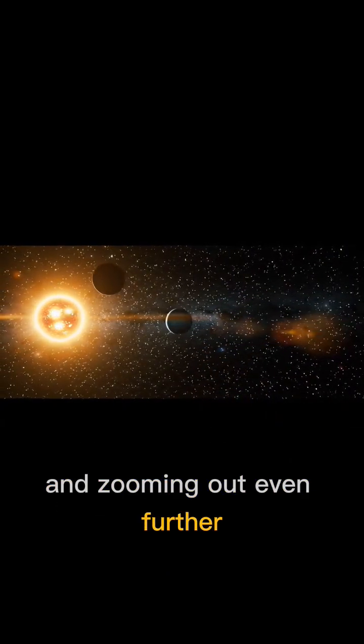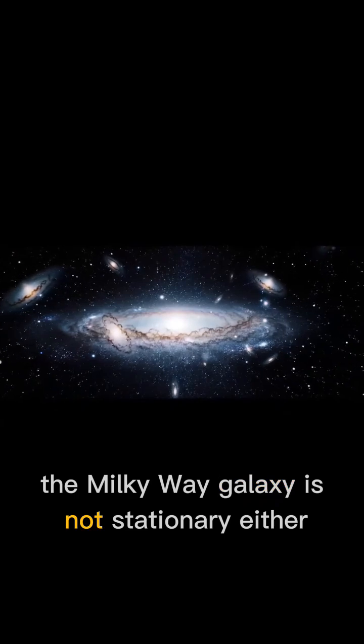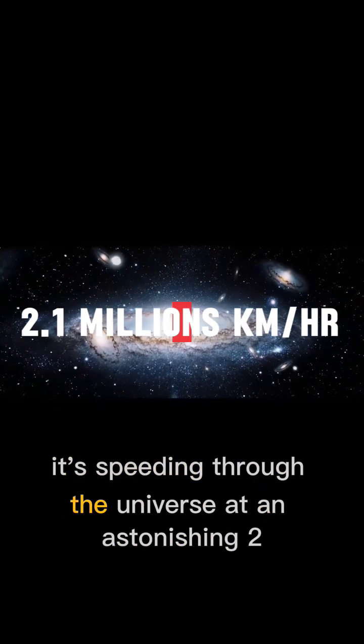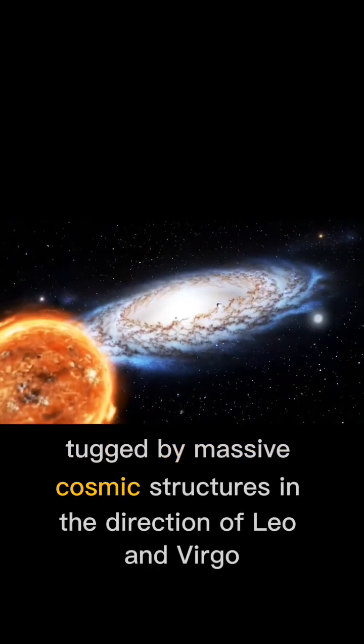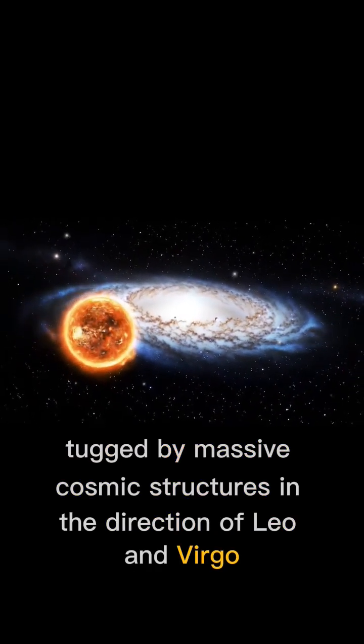And zooming out even further, the Milky Way galaxy is not stationary either. It's speeding through the universe at an astonishing 2.1 million kilometers per hour, tugged by massive cosmic structures in the direction of Leo and Virgo.